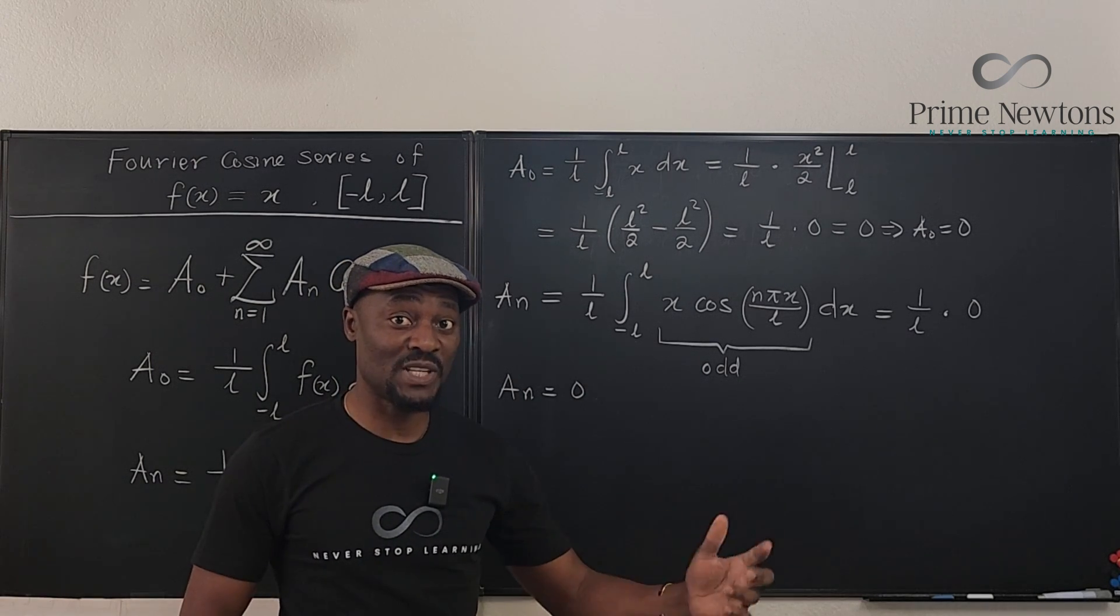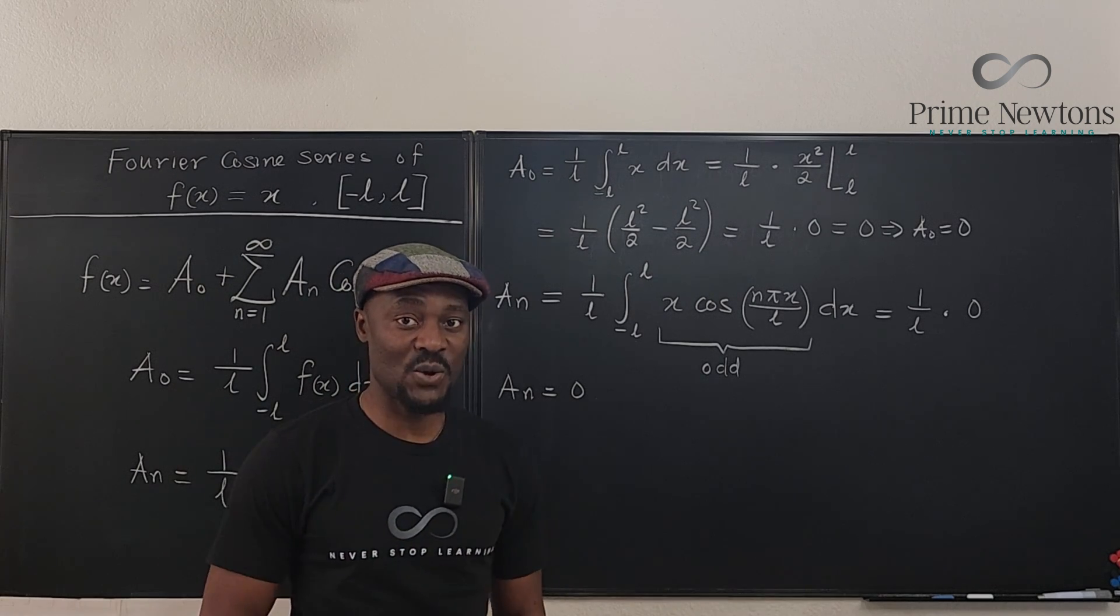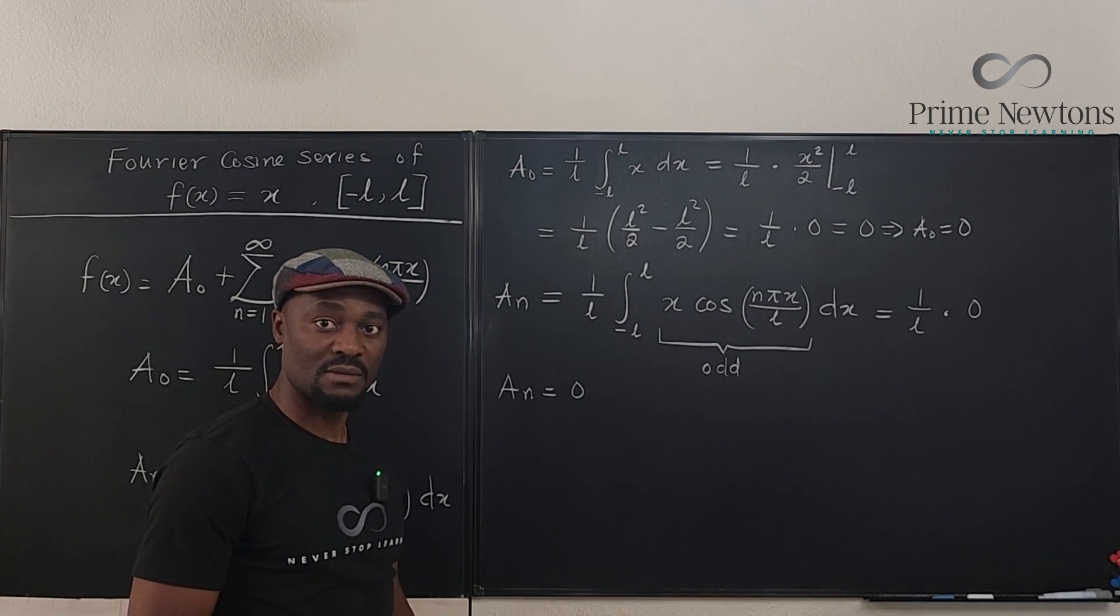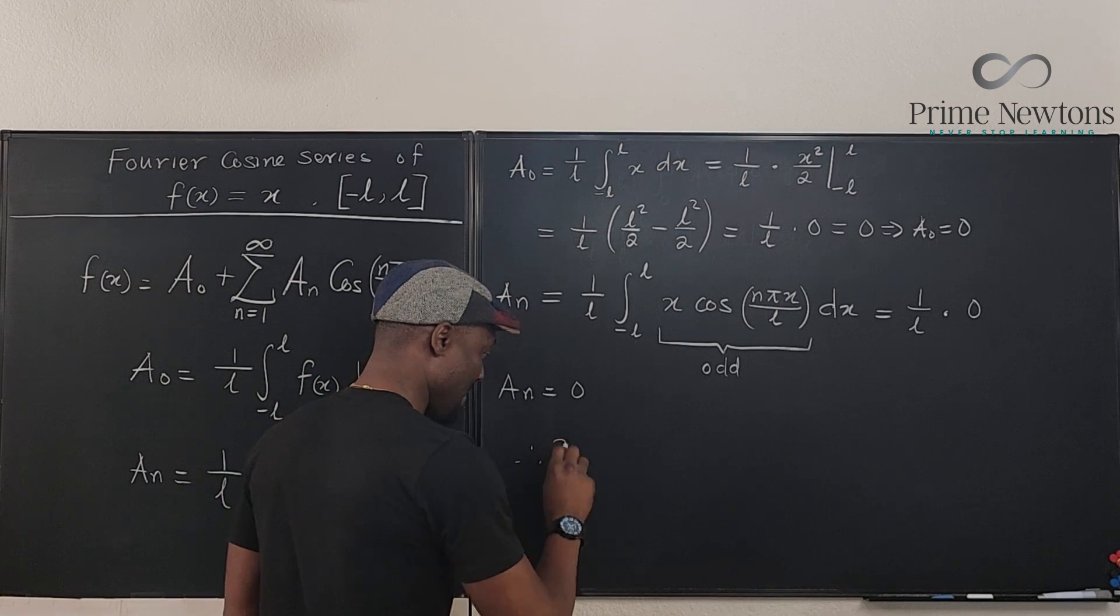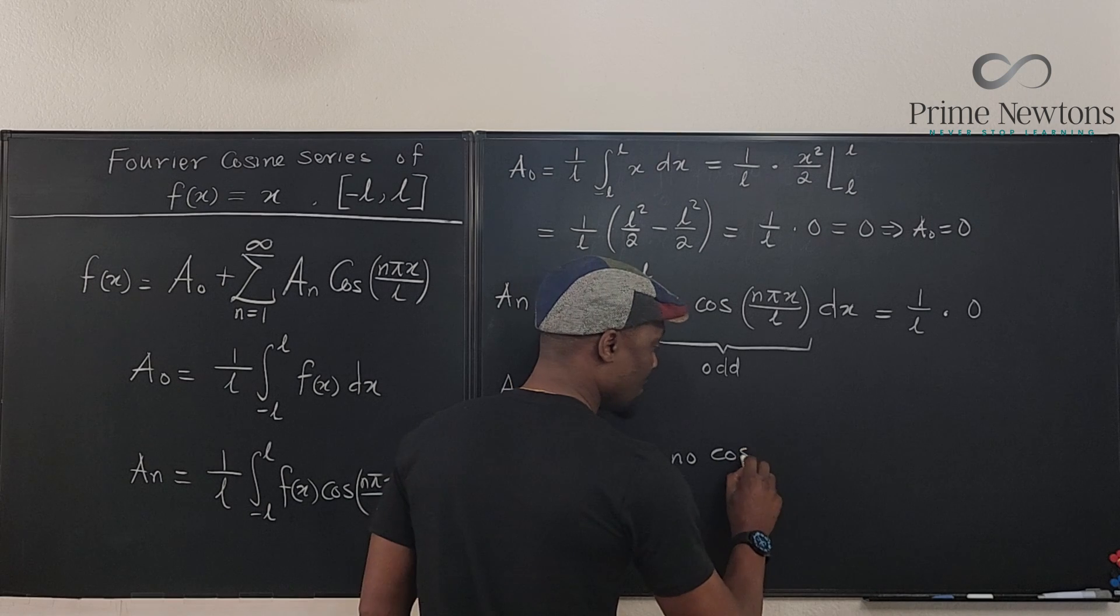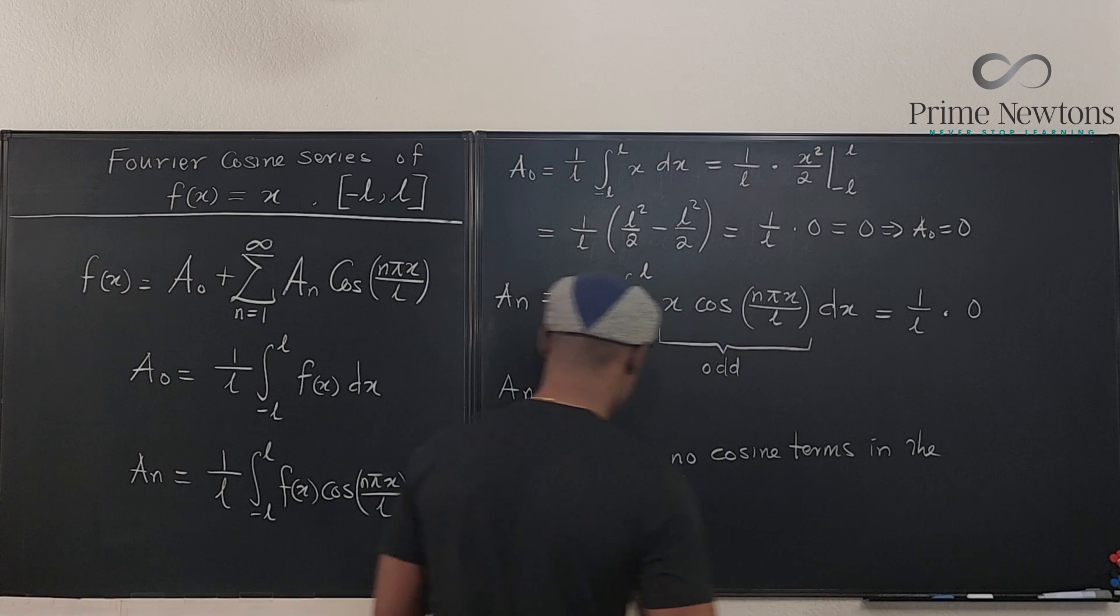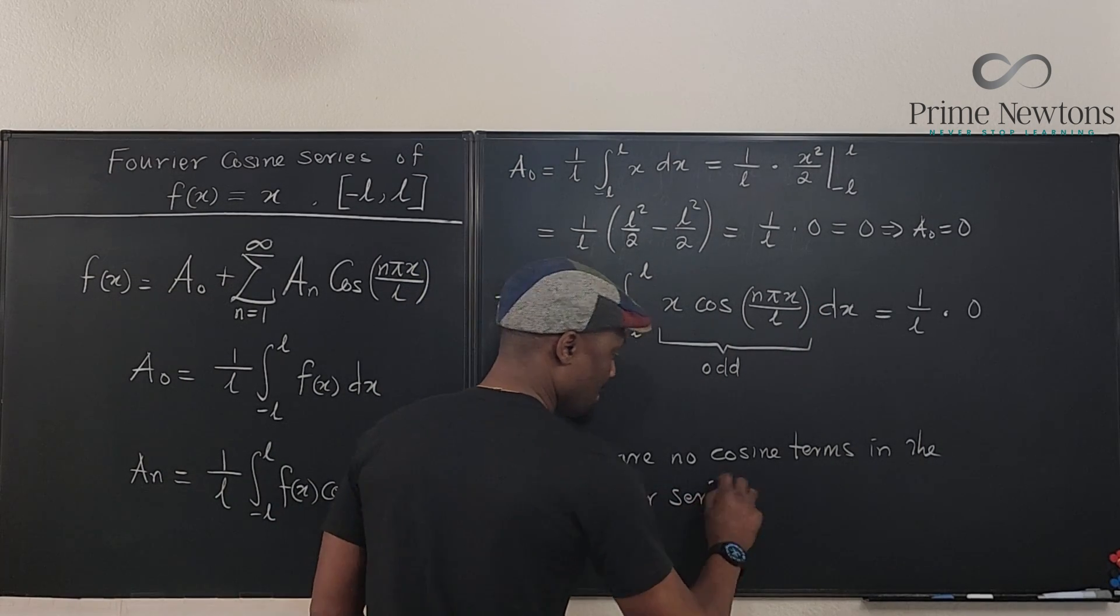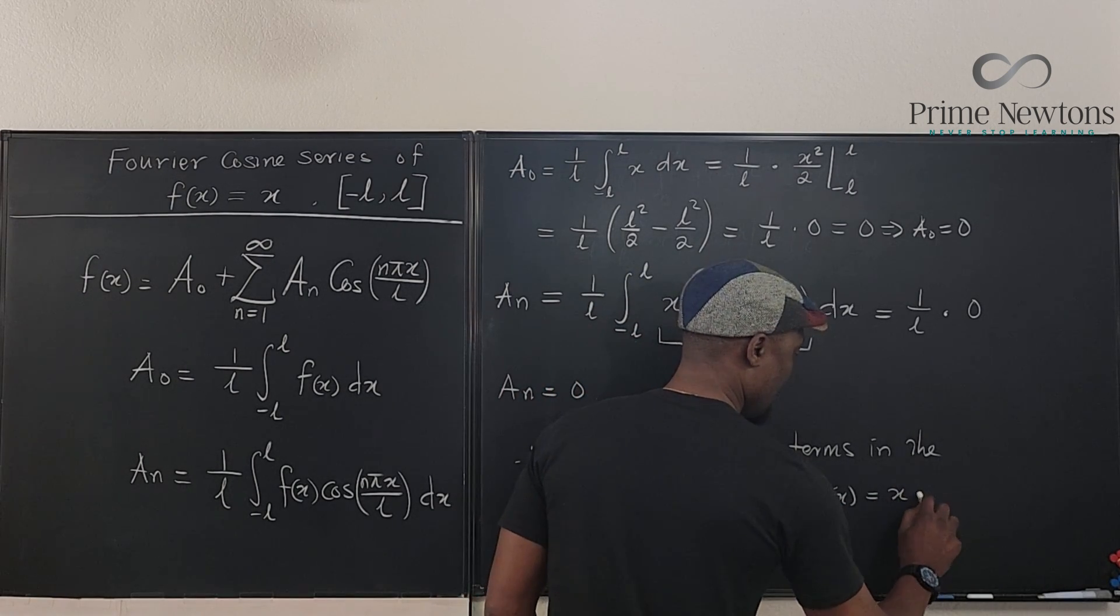So the Fourier cosine series of f = x does not contain any cosine terms because the coefficients, both the initial and the rest of them, are always zeros. So therefore, there are no cosine terms in the Fourier series of f(x) = x.